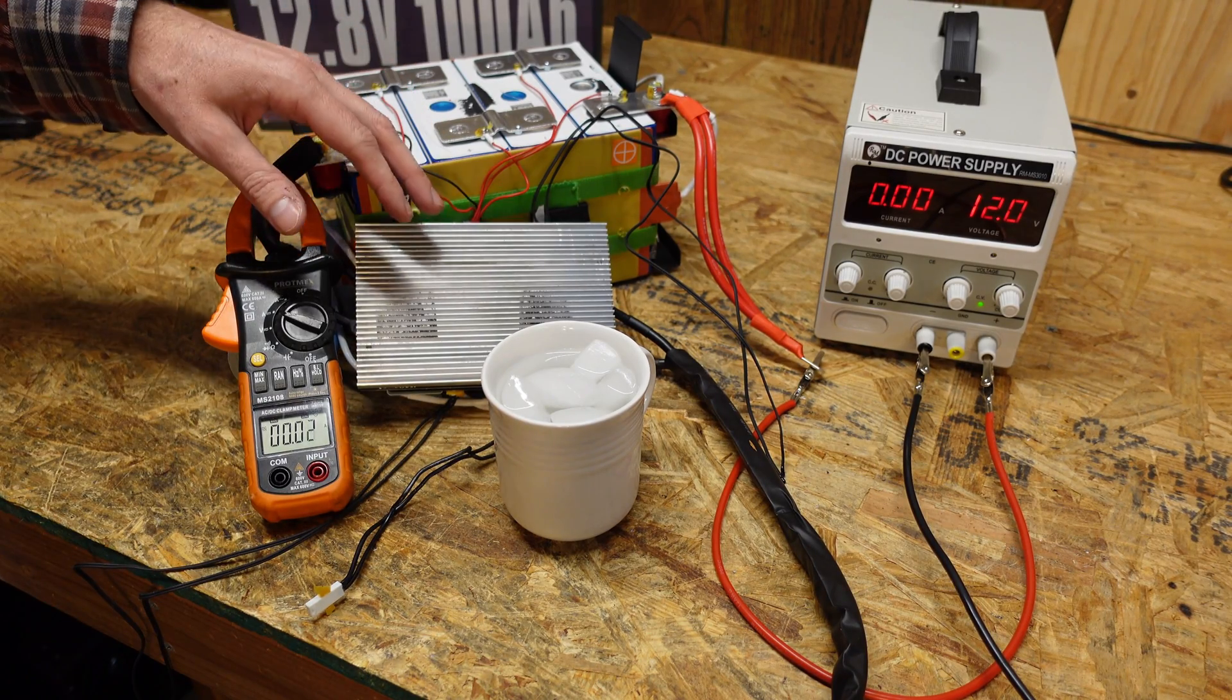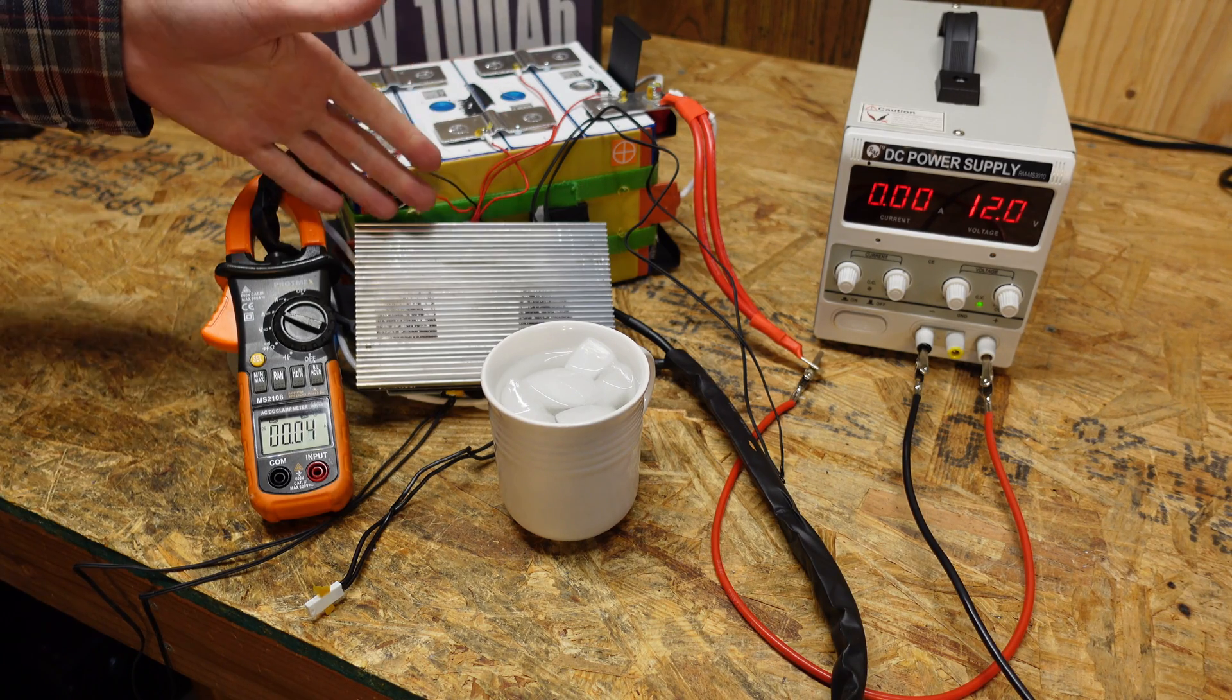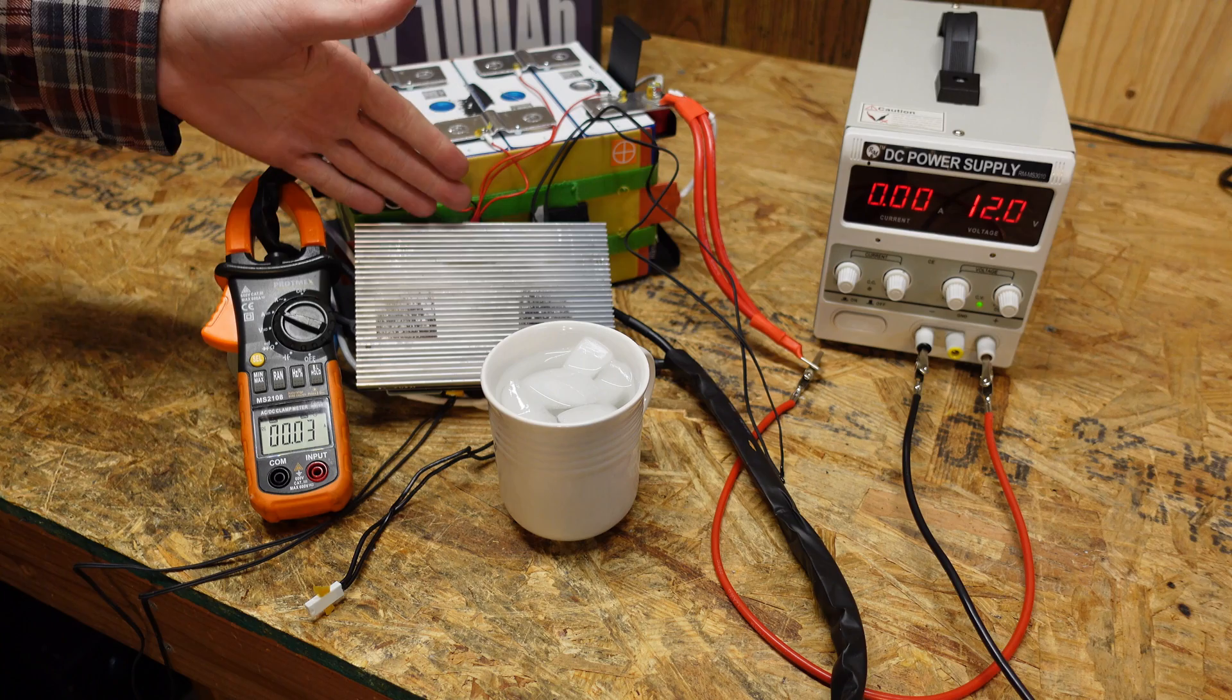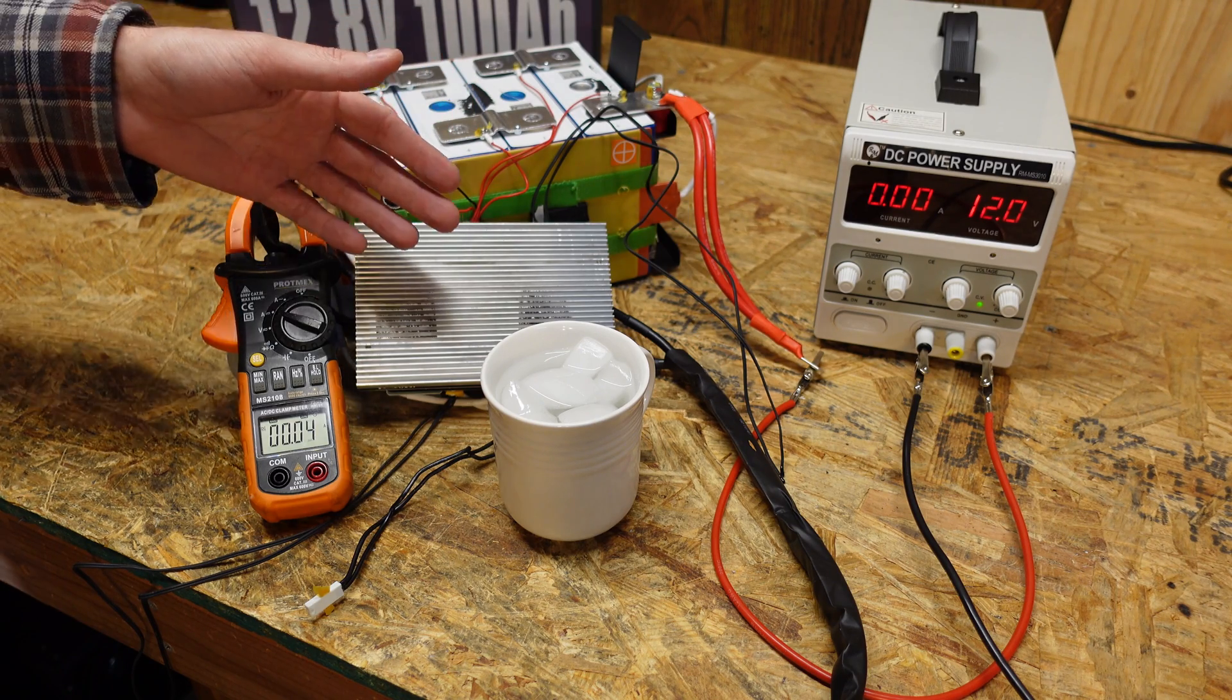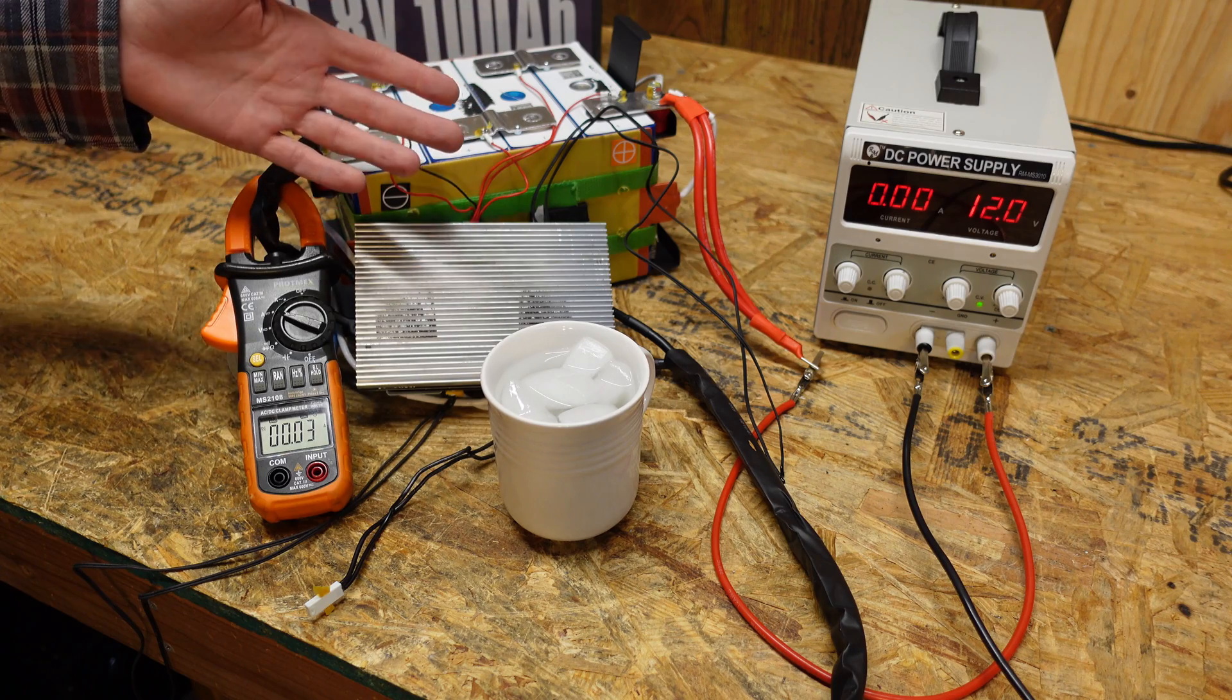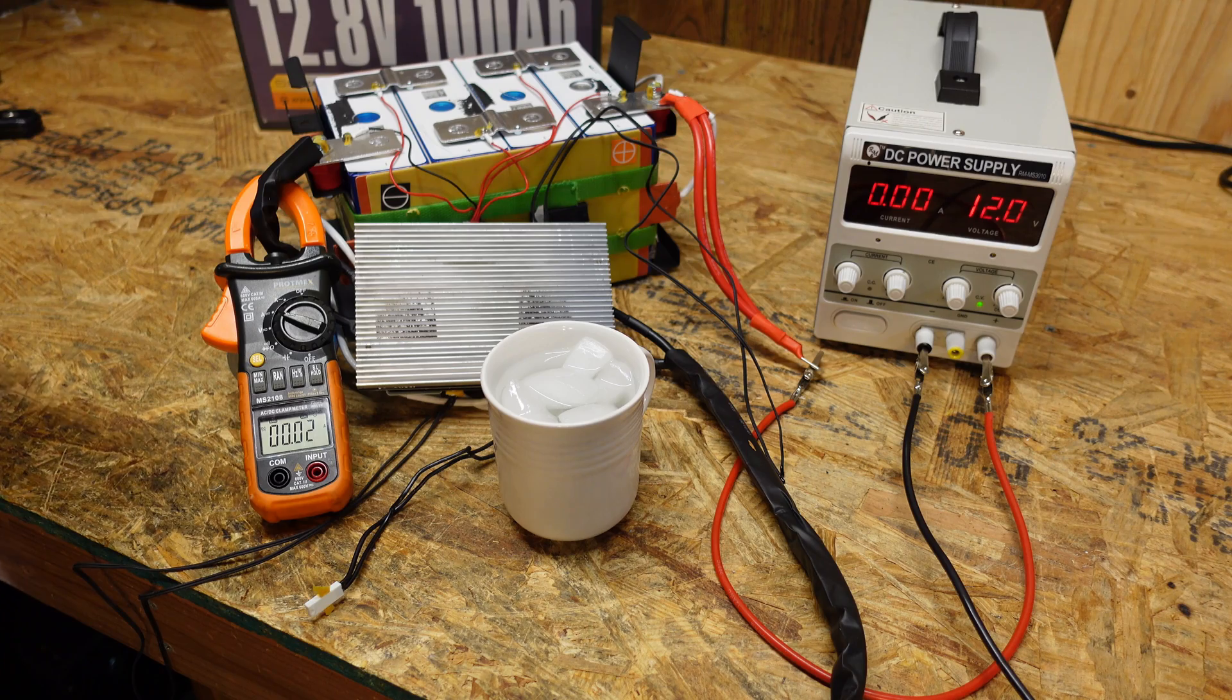Okay guys so next we're going to test the low temperature protection and the heating functionality of this BMS. Now I expected this BMS to behave exactly like the other one and it doesn't. And I also noticed I didn't have any problems with that Bestech inverter when I did the capacity test. So I'm going to assume that this one is programmed differently even though it's the same BMS from the other battery.